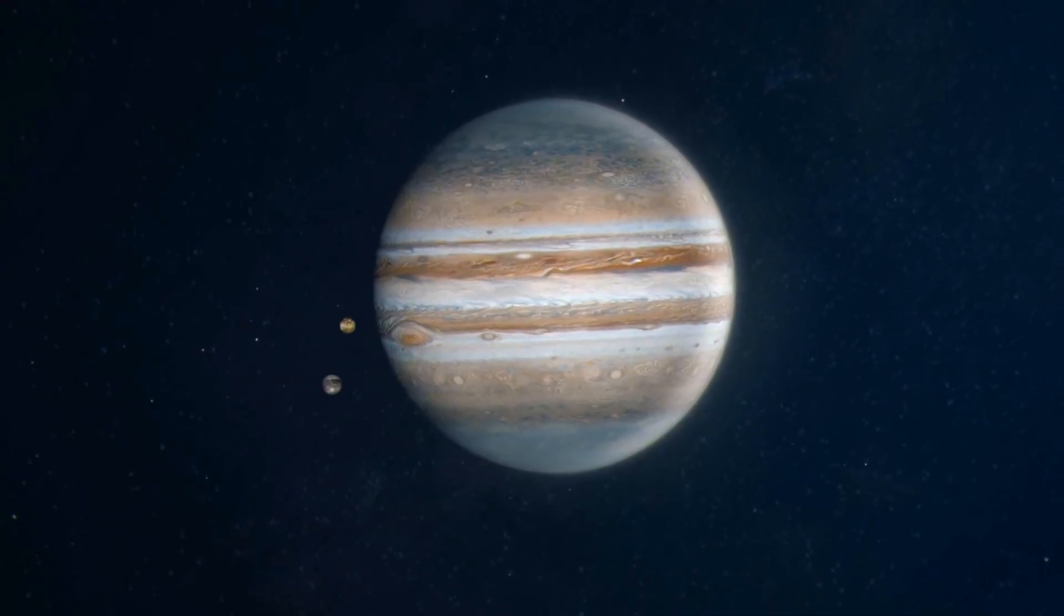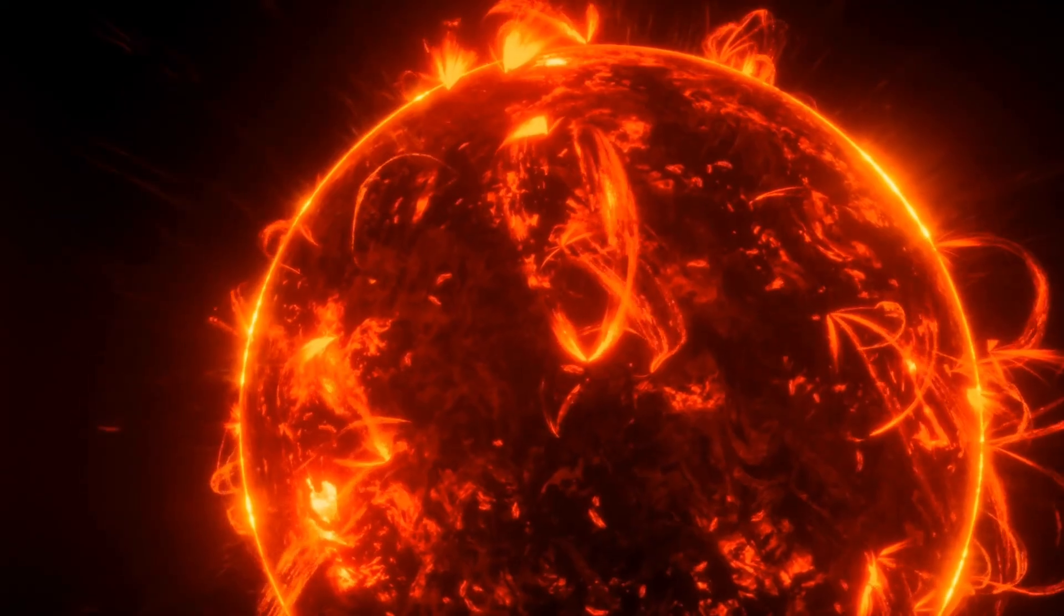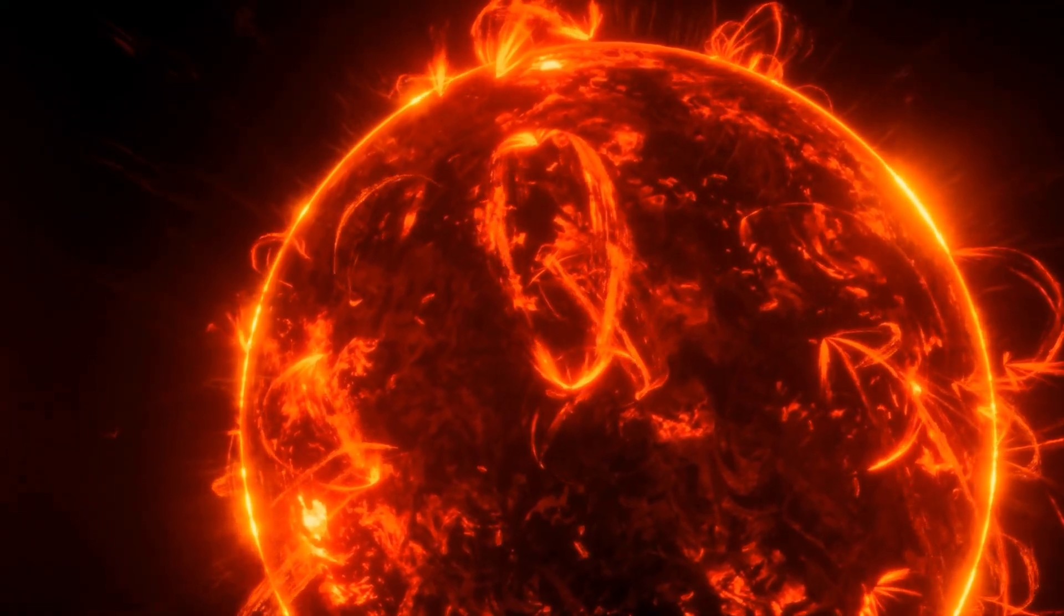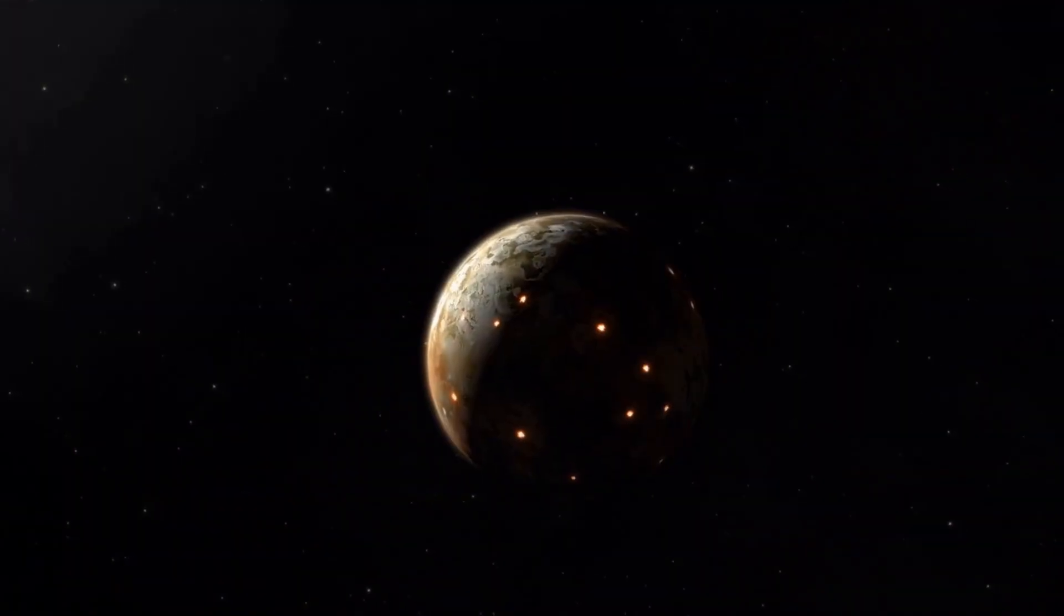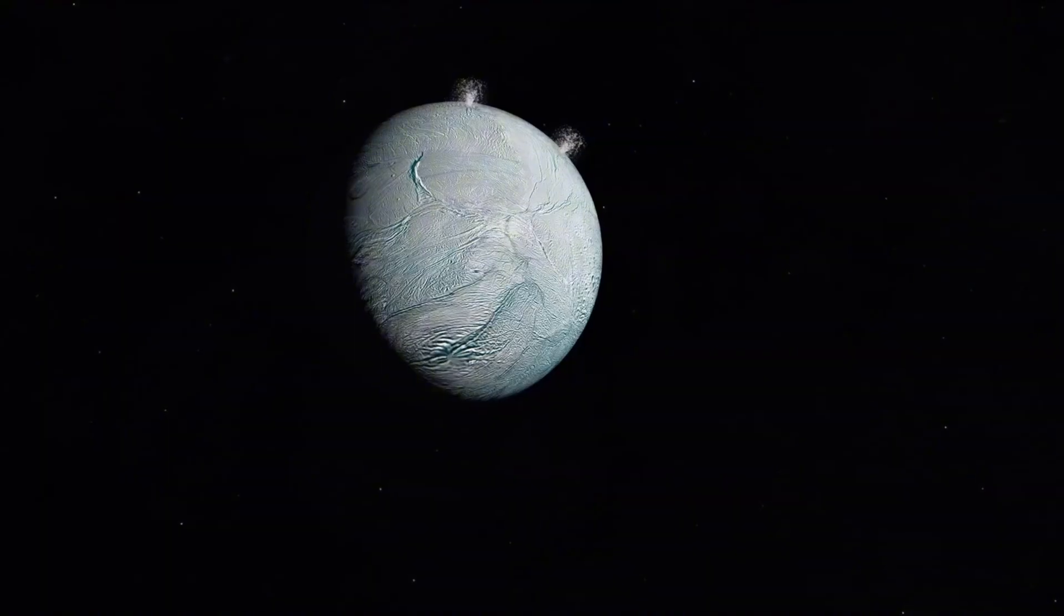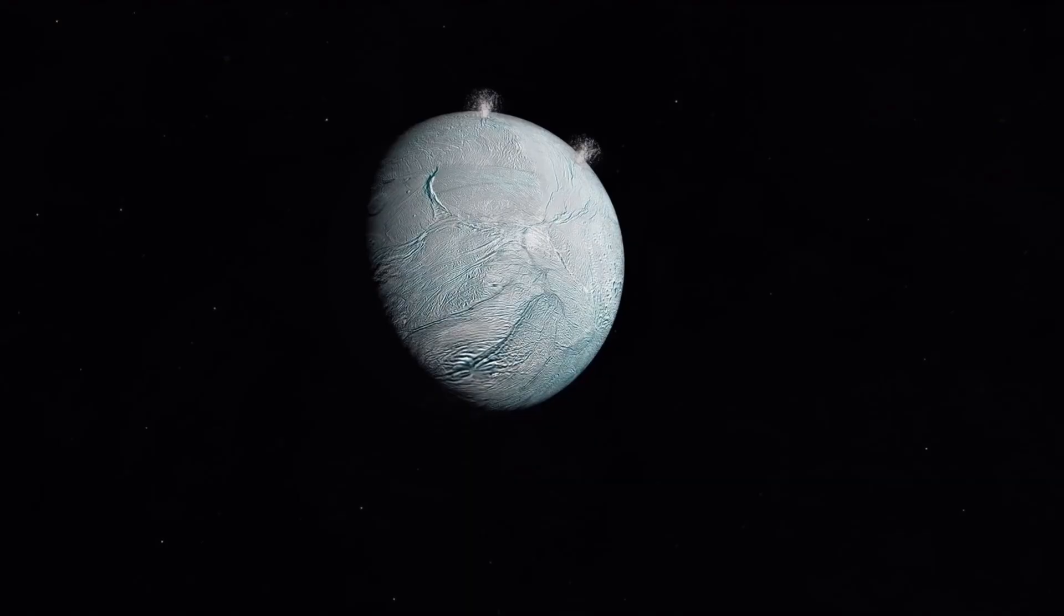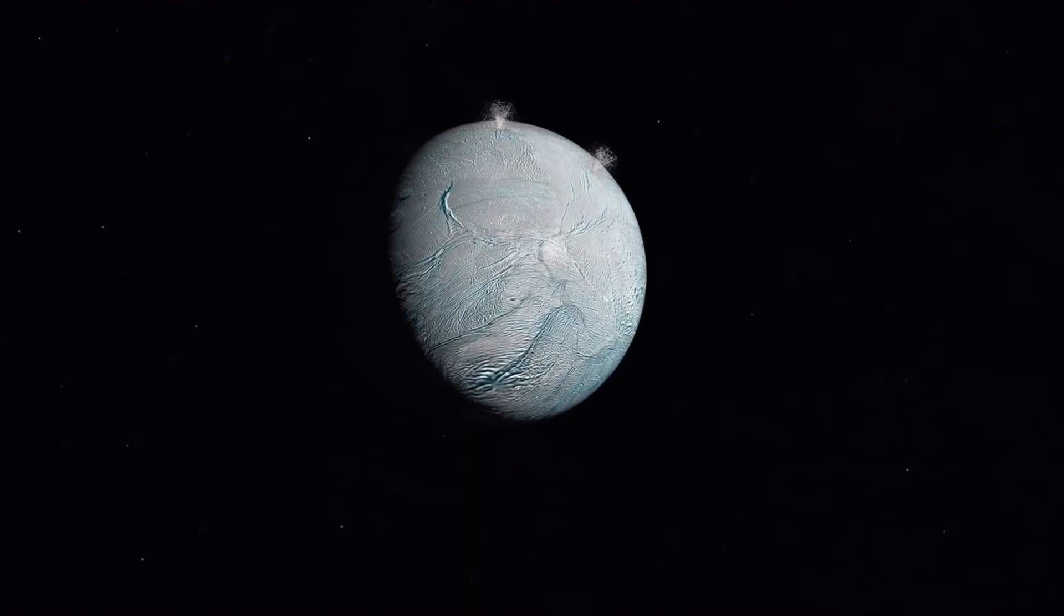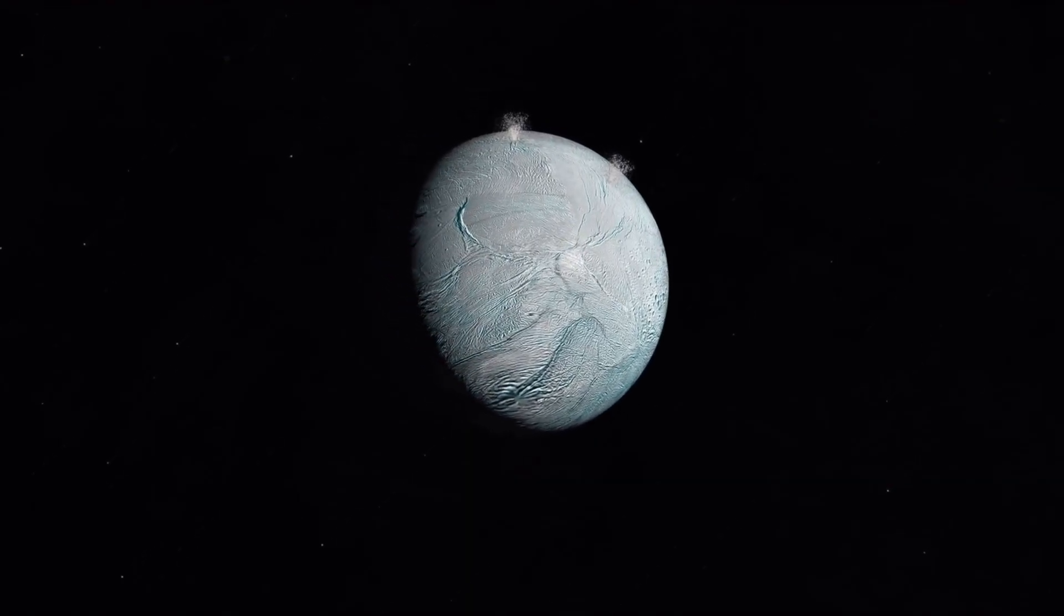But the true surprises lay with the moons. On Io, Voyager revealed a volcanic inferno exploding with eruptions so massive they could be seen from space. Europa, meanwhile, glistened under a smooth, icy shell, hinting at a hidden ocean and possibly life beneath.